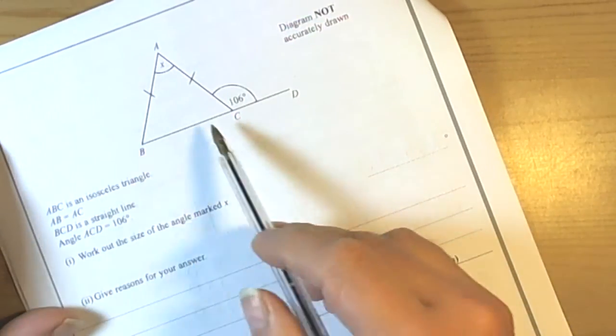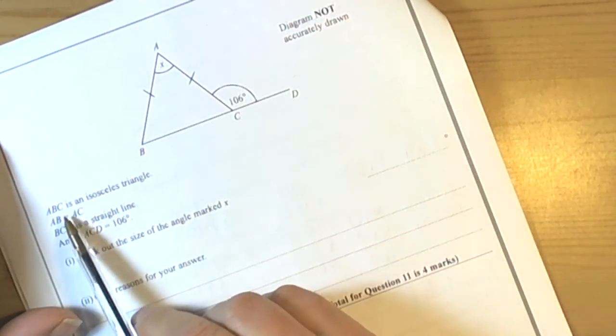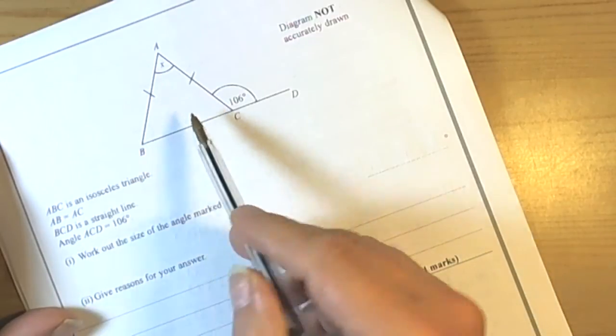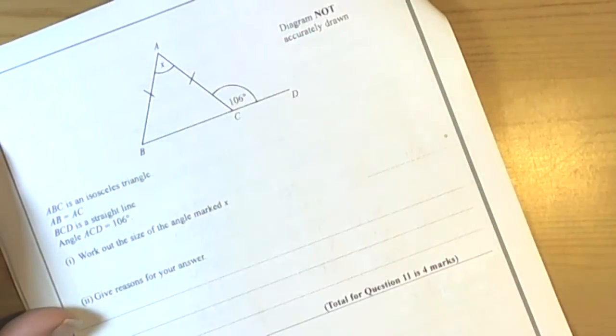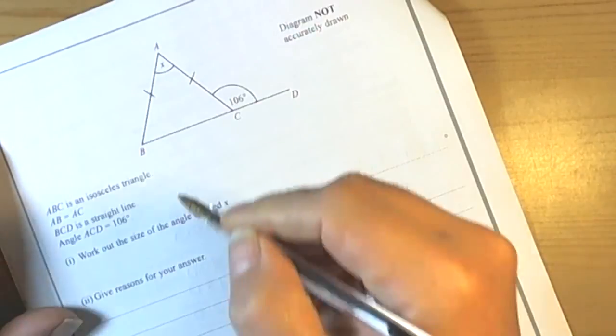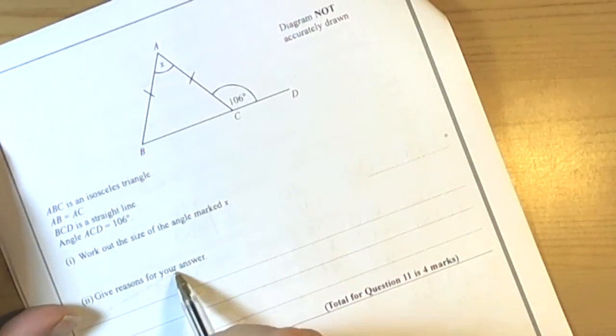Okay, so this question 11 on the mock paper is talking about an isosceles triangle, and therefore we need to start thinking to ourselves what theories do we know about isosceles triangles, particularly as the question says give reasons.